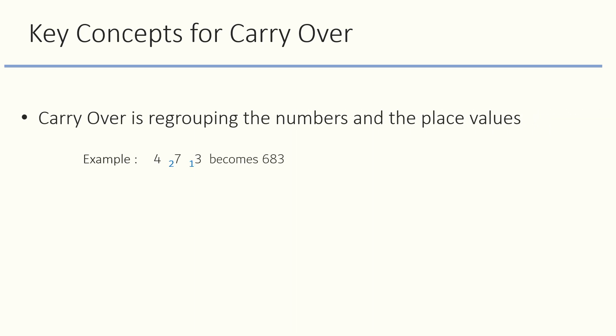For example, here we have digit 4, then 7 with carryover 2 and 3 with carryover 1. After we solve it, we get 683. So you can see here how all the numbers and the place values have changed.